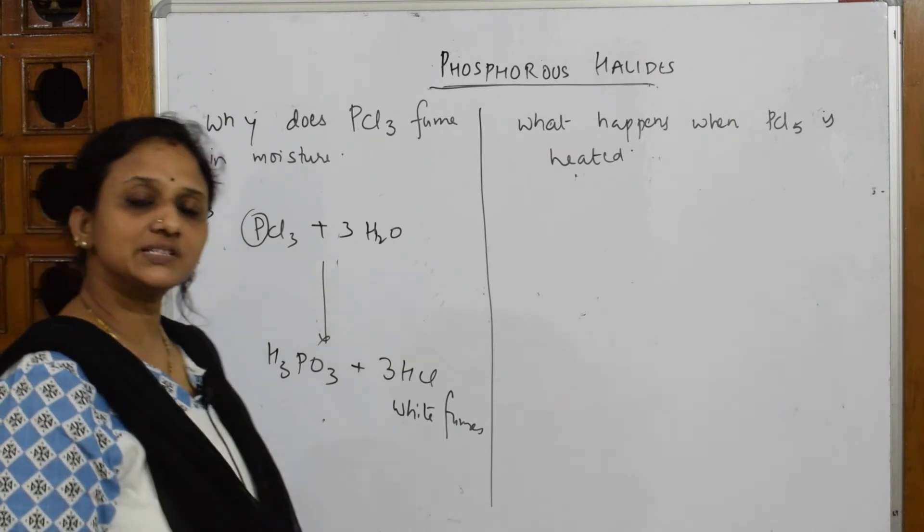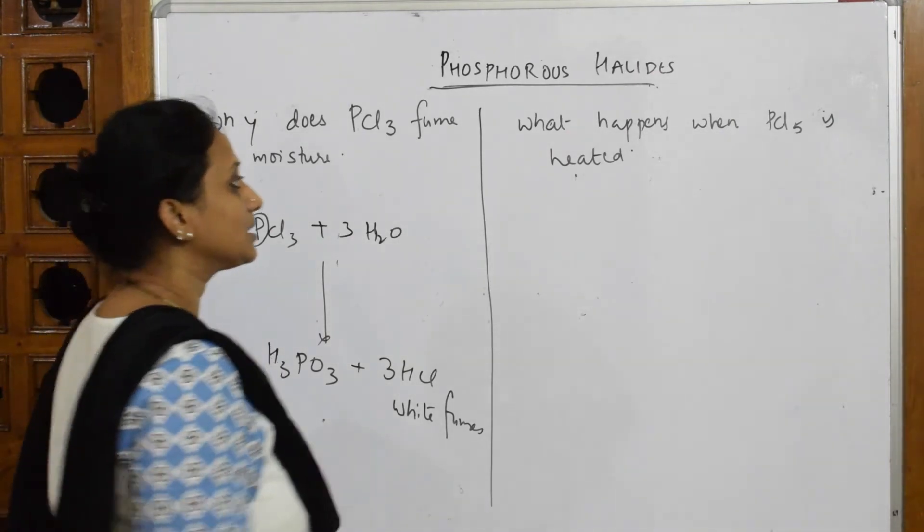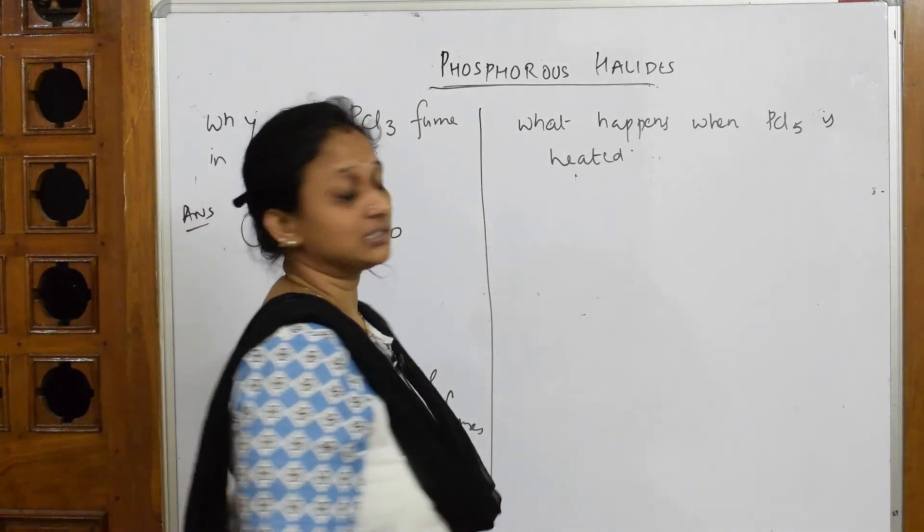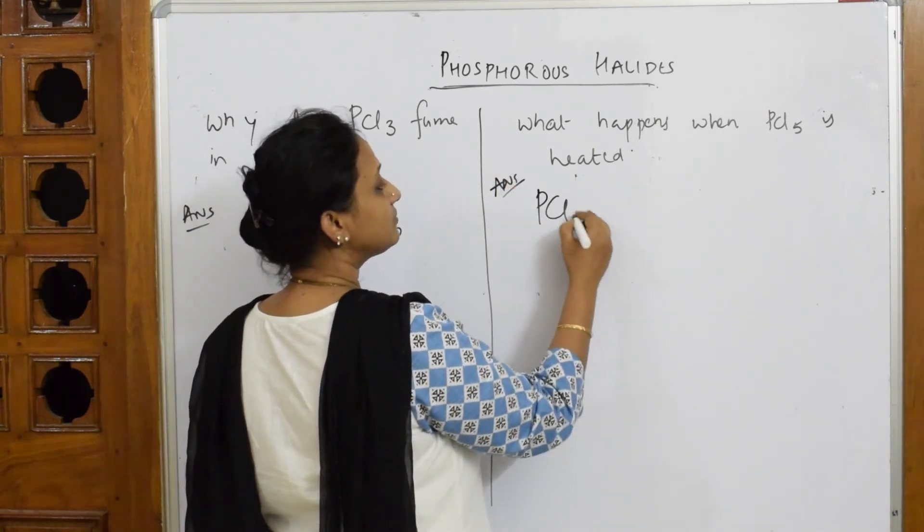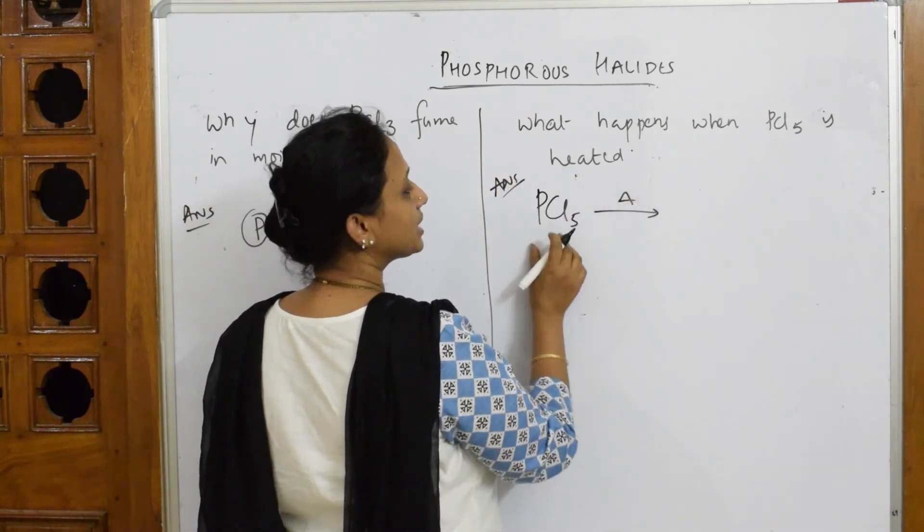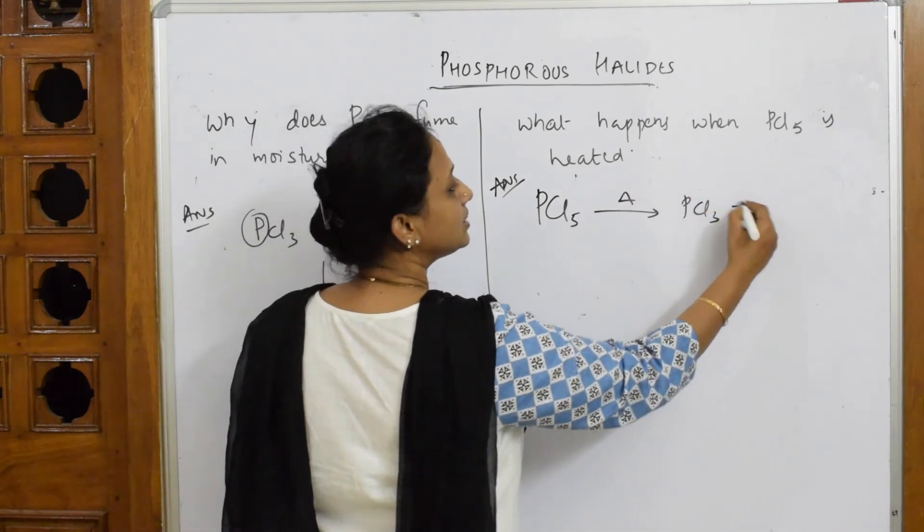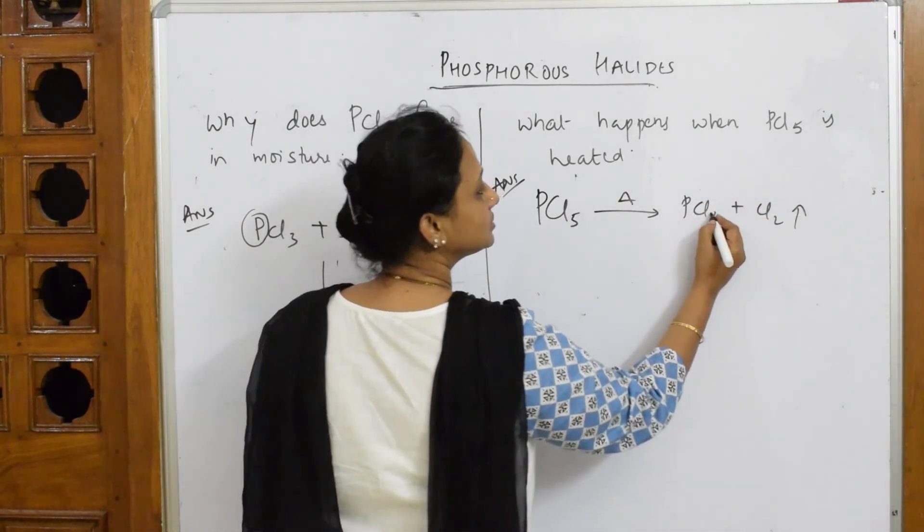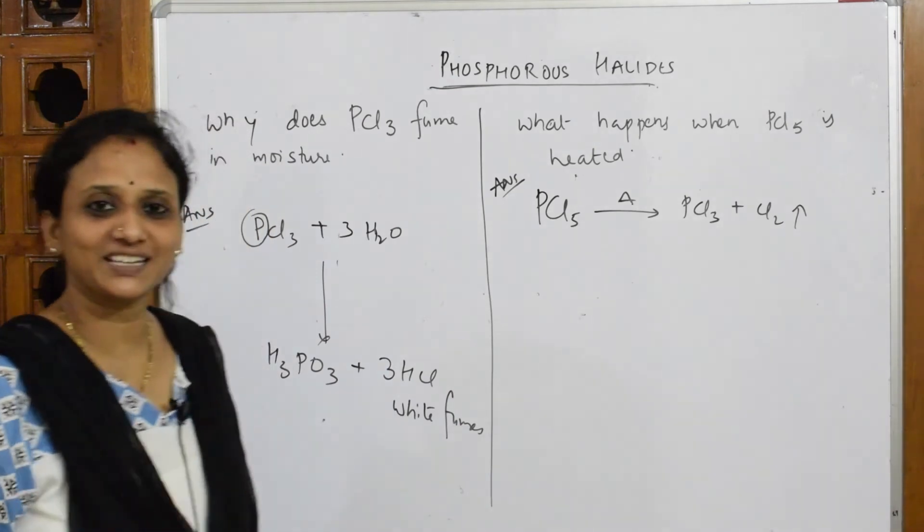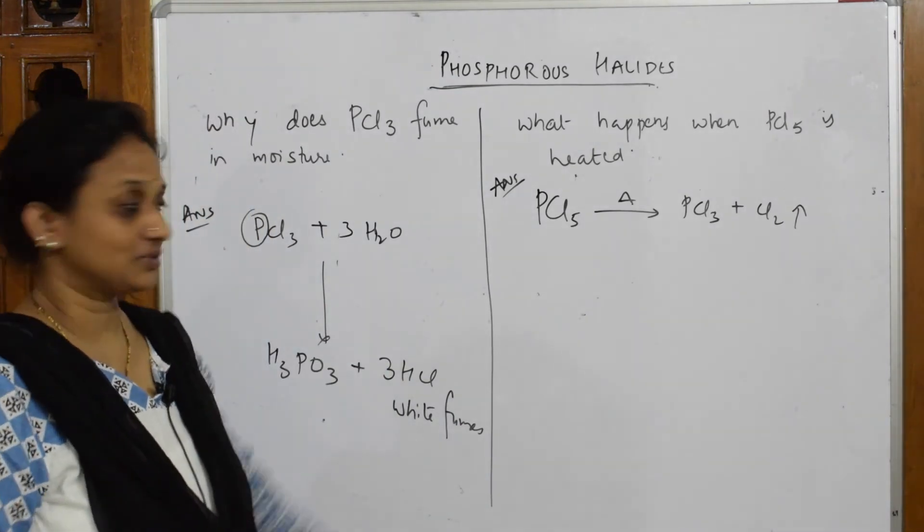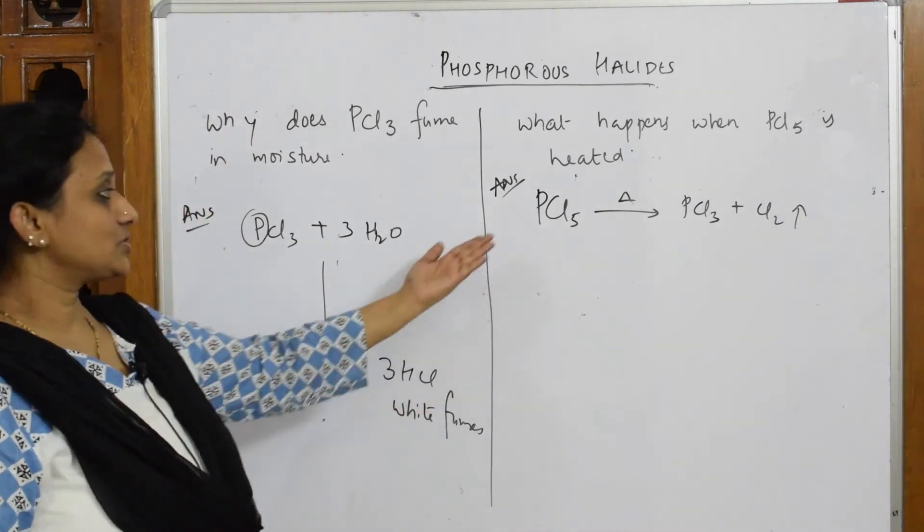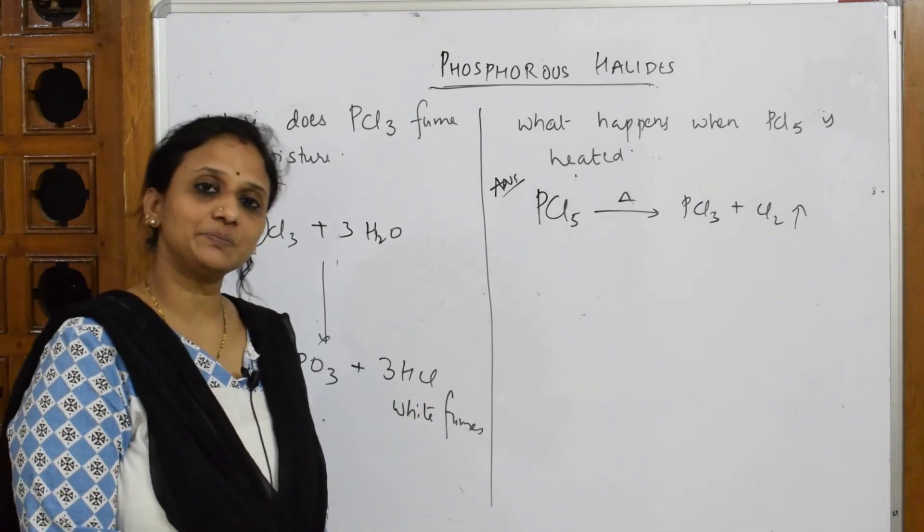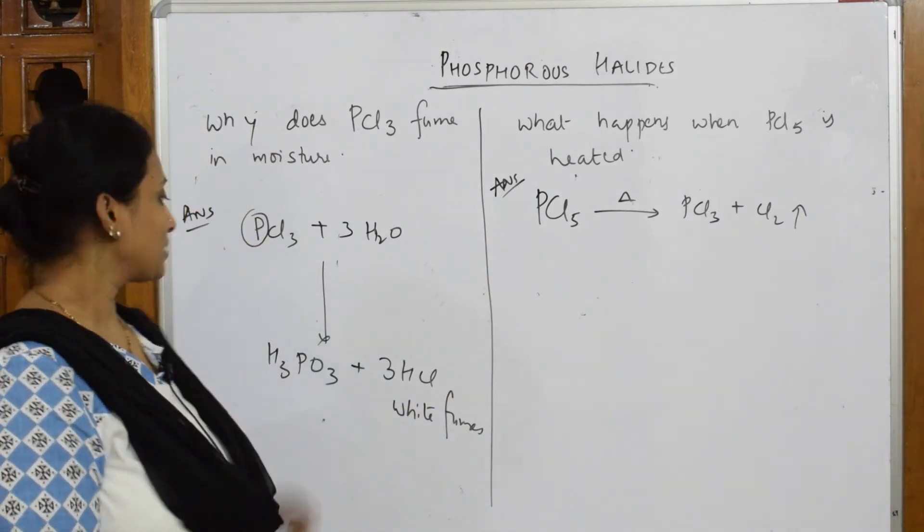What happens when PCl5 is heated? It is only dissociation. PCl5 when you are heating it will break up into PCl3 plus chlorine gas. So simplest reaction. Dissociation of PCl5 into PCl3 and chlorine. Every mark is important.